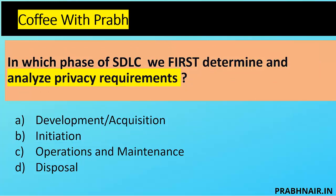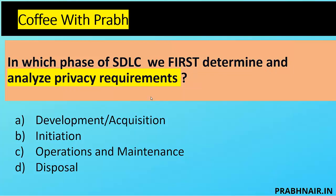Next question: In which phase of SDLC do we first determine due diligence and analyze privacy requirements? We are still in a phase of identifying and analyzing, not documenting. Development/Acquisition is where, after interaction, we decide whether a vendor's application meets our privacy needs — so that is too late. Disposal is withdrawal. The answer is B — Initiation.